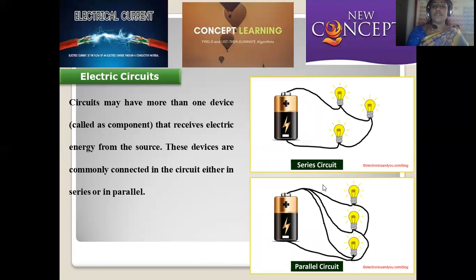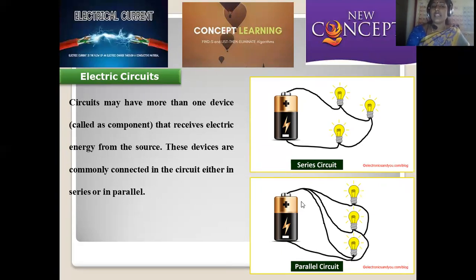An electrical circuit is made in two different possibilities — either in series form or in parallel form. Series means one-by-one connection: one component attached to another in a continuous framework. In parallel, with respect to the battery, one wire is connected with one bulb, the second wire with a second bulb, and the third with a third bulb. In this manner different parallel circuits are drawn in the single device.